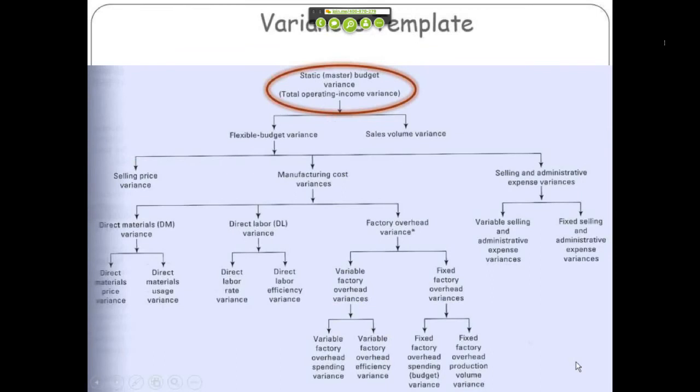This is kind of the onion peeling picture. You start off with that static budget variance. You get a sales volume and a flexible budget variance. And then you take this flexible budget variance and you really dig down all the way to find out which of your materials are causing variances.